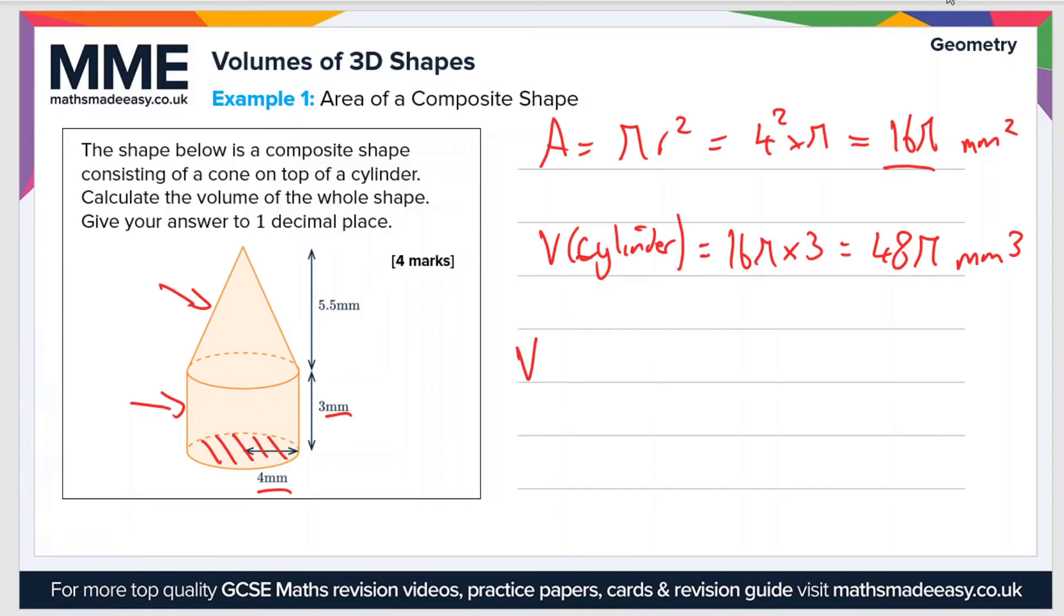Now the volume of the cone, we use the formula, which is 1/3 times the area of the base, which in this case we've already worked out as 16 pi, and then we times that by the height of the cone, which is 5.5 millimeters. And if we plug all that into the calculator, it gives us a value of 88 over 3 pi millimeters cubed.